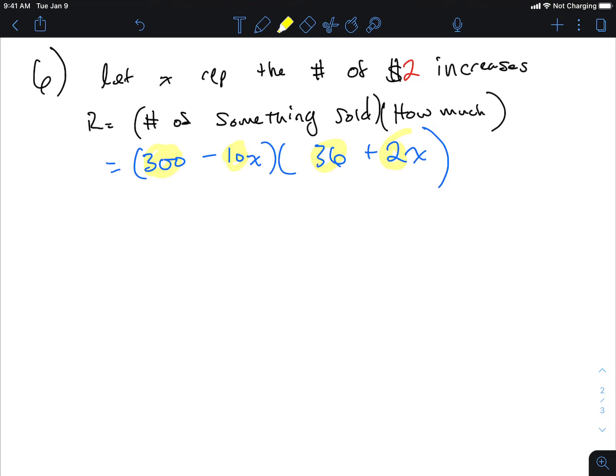Now what's different about this than any other question we've done in completing the square? It's in factored form. The question's asking what's going to maximize revenue. You see that word maximize? Complete the square. I can't complete the square in its present state. It needs to look like standard form in order to complete the square.